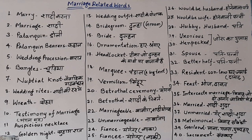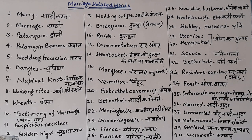The tenth word is 'testimony of marriage.' In British English it's 'testimony' and in American English also 'testimony.' Testimony of marriage means 'mangal sutra.' An alternative word is 'auspicious necklace,' which also means 'mangal sutra.' The eleventh word is 'auspicious necklace,' meaning 'mangal sutra' — the symbol of marriage.